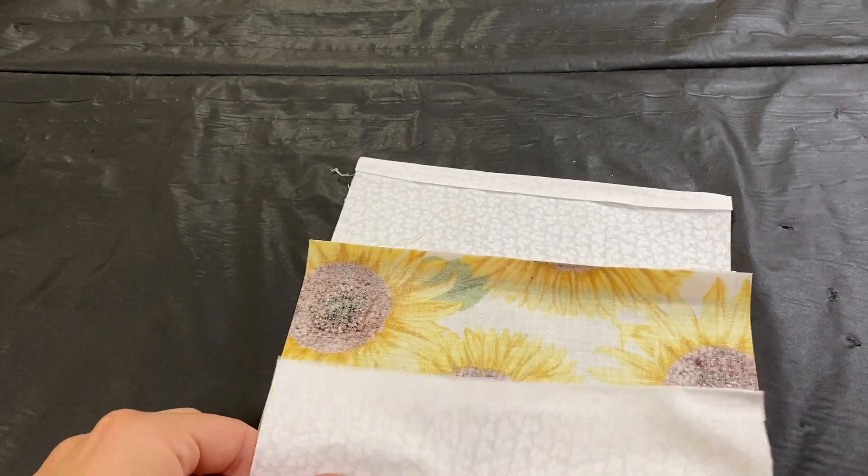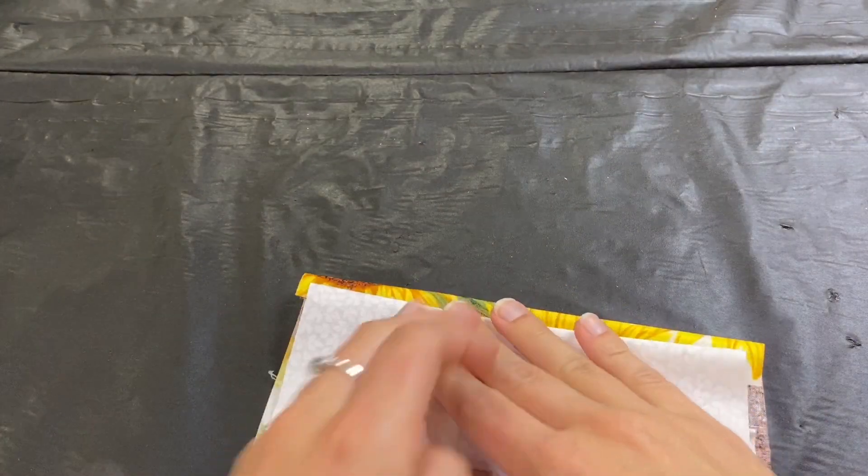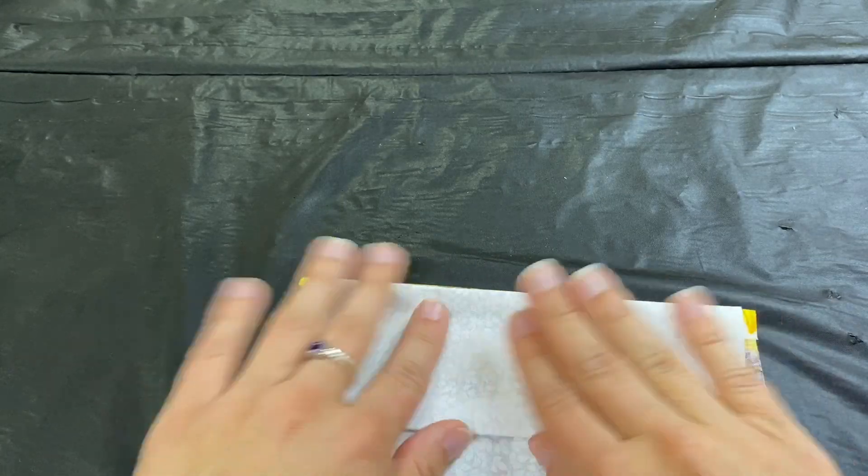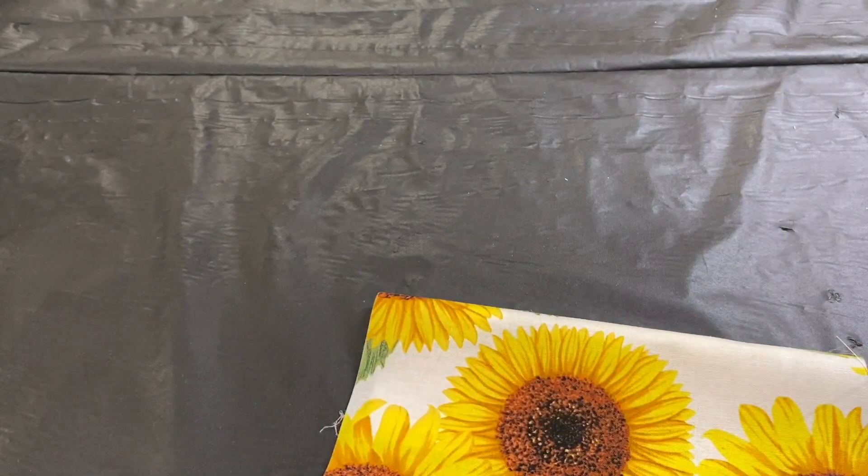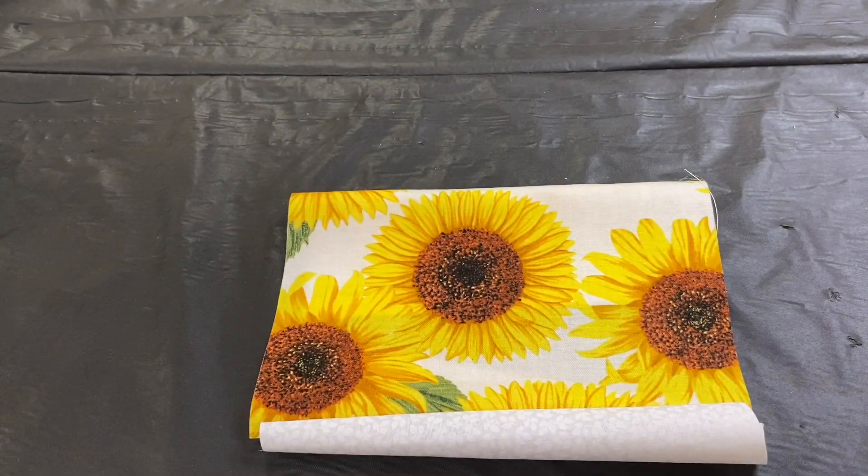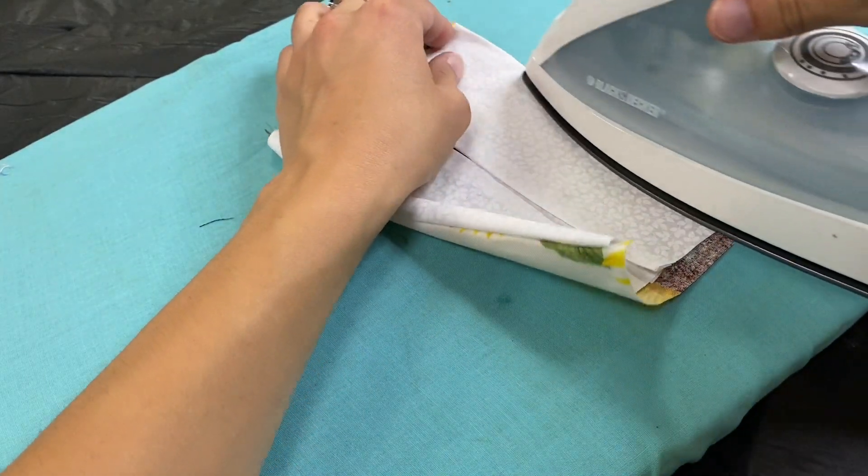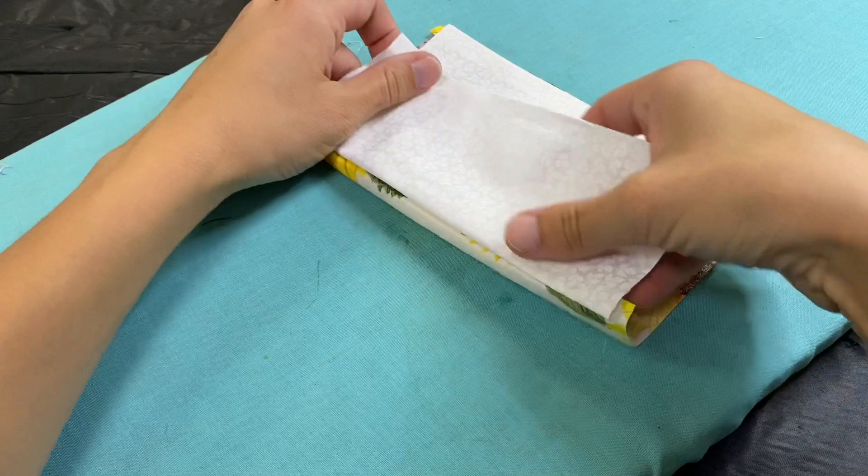So now you're going to turn these inside out like this and that way you can start to see how your pocket is forming so this is where you'll be putting in your non-woven layer and this outside is the bright sunshiny outside of your mask. Even though we're using hot glue I recommend doing a quick press with the iron just to make it look all nice and neat.